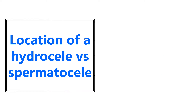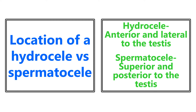The location of a hydrocele versus a spermatocele — not a super common question, but something that I did see thrown around a couple of times. A hydrocele is going to be anterior and lateral to the testes. A spermatocele is going to be superior and posterior to the testes.